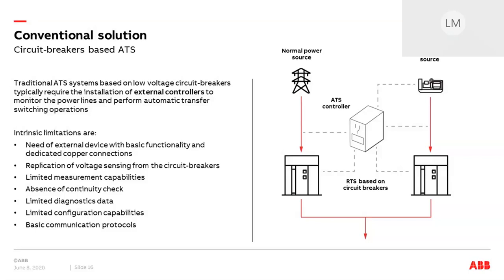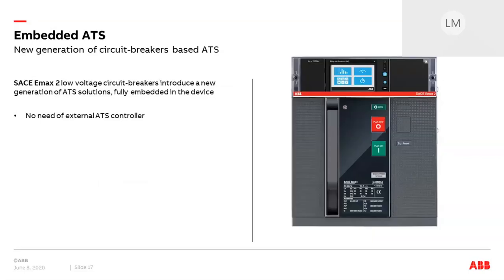So the question is: why not fully exploit the advanced capabilities offered by the ATS circuit breakers? The embedded ATS function is the answer to this technological evolution. ABB Ekip and EMAX2 circuit breakers offer the possibility to fully embed advanced logics in one single device by taking advantage of the most advanced features of the protection trip units — with no need of any external controllers.